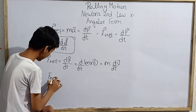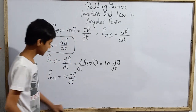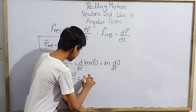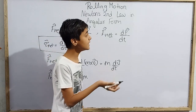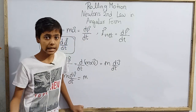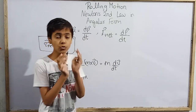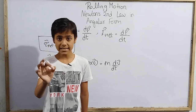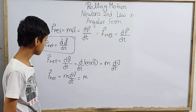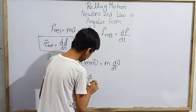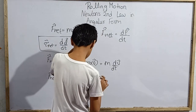So F_net vector equals m times d(v)/dt. Now, let's keep mass as it is. For rolling motion — which involves both translatory and rotational motion — we can substitute v = r × ω. So we write m times d(r × ω)/dt.